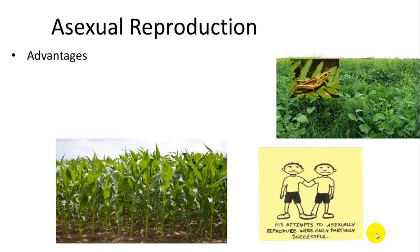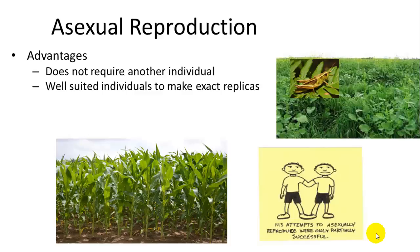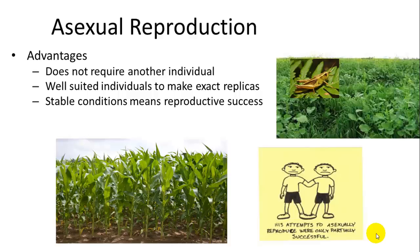The advantages of asexual reproduction — why would this reproductive mode be favored — is that it doesn't require another individual. You can be stranded on a deserted island and populate it through asexual reproduction. It's well suited for making exact replicas and is favored in areas with stable conditions. If you are a fit individual well suited for your environment, it's better to make exact copies of yourself so all your progeny will also be well suited. Thus, the progeny are fit.